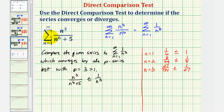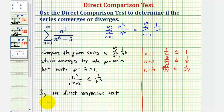The terms of this series are less than or equal to the terms of the known converging series. Therefore, by the direct comparison test, the summation from n equals one to infinity of n to the third divided by the quantity n to the sixth plus five converges.